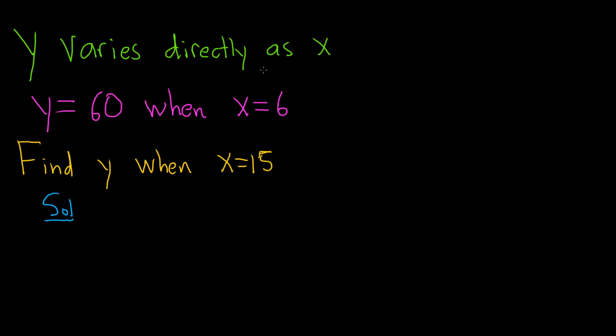Y varies directly as x, which means that y equals k times x. That's what it means for y to vary directly as x.